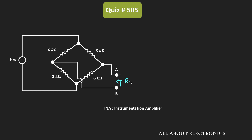To find the equivalent resistance between these two terminals, let us remove all the independent sources in the circuit. We need to replace all voltage sources with a short circuit and all current sources with an open circuit. Since the given circuit only consists of a voltage source, we will replace it with a short circuit.